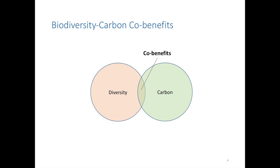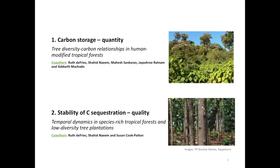Against this background, the goal of my research is to understand relationships between biodiversity and carbon sequestration in tropical forests, and in doing so, to understand biodiversity-carbon co-benefits — in other words, how policies that promote sequestering and storing carbon from a climate change point of view provide opportunities for biodiversity conservation. I focus specifically on trees in tropical forests, because trees are the group of organisms primarily responsible for taking carbon out of the atmosphere and storing it in tropical forest ecosystems.